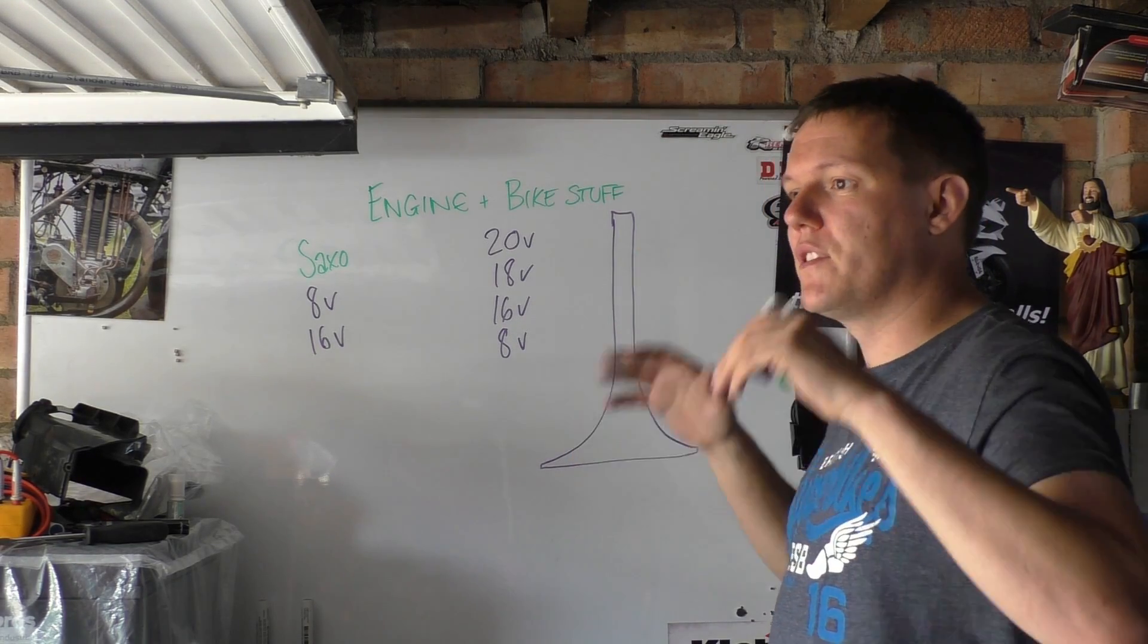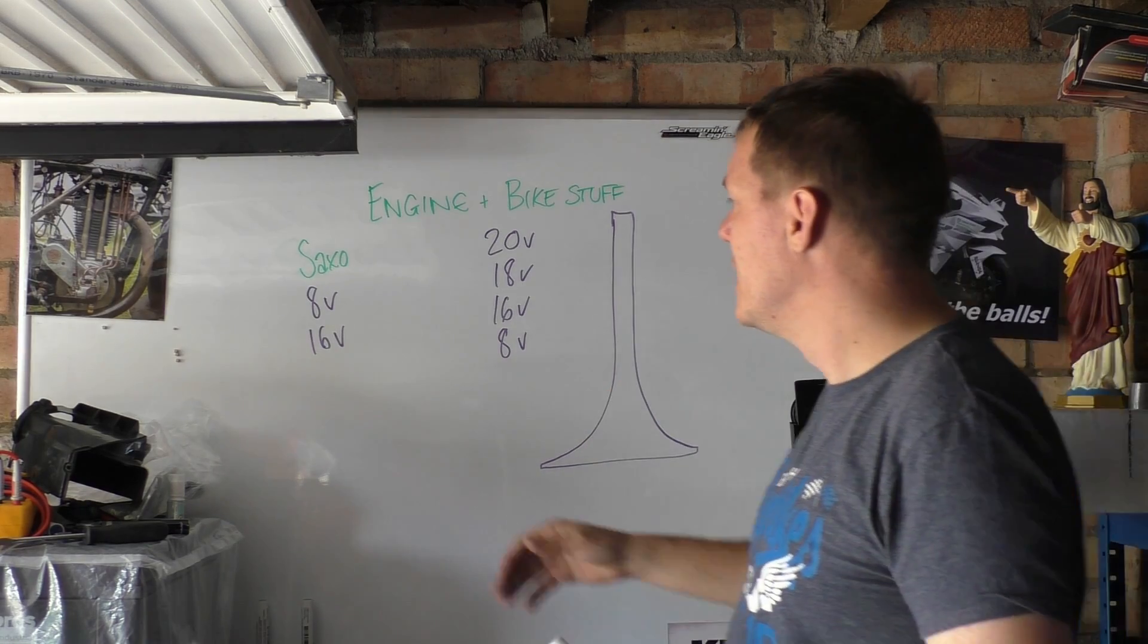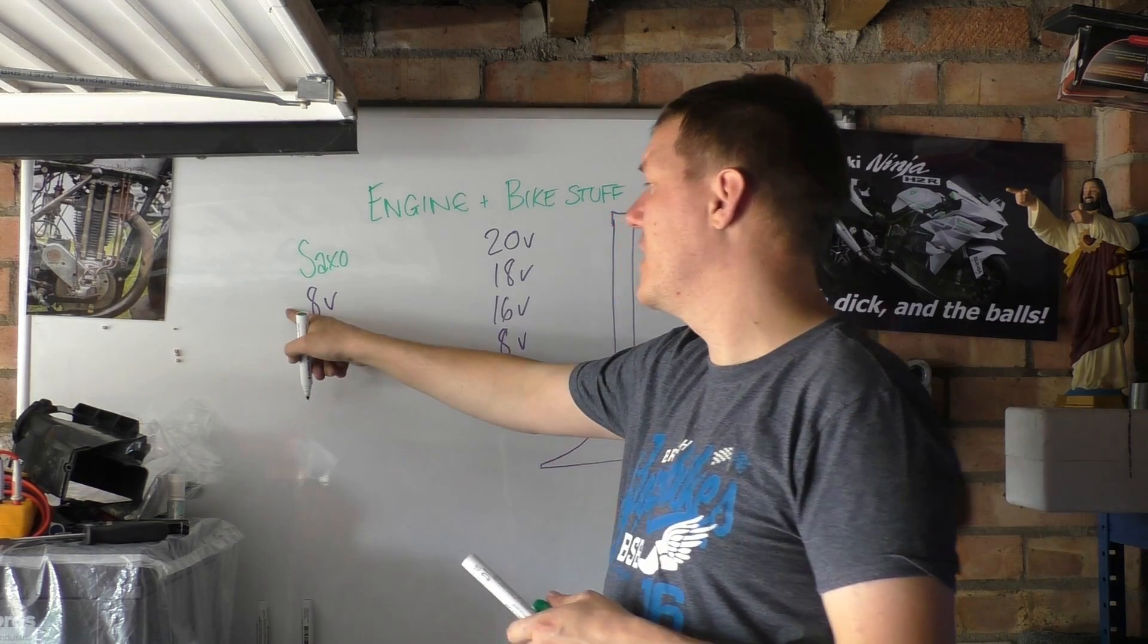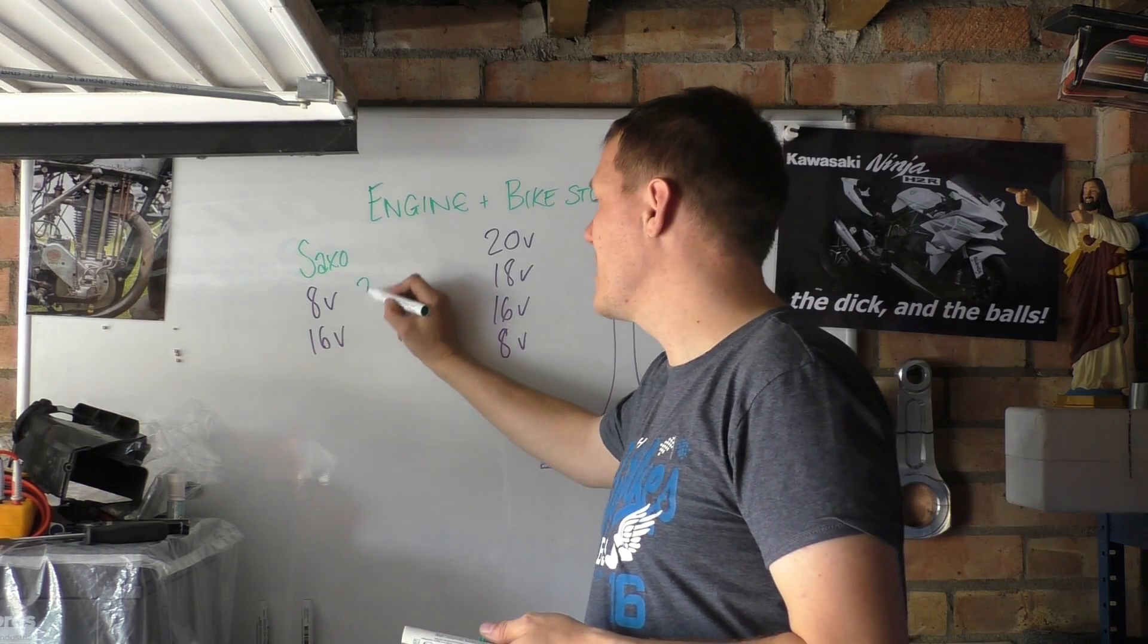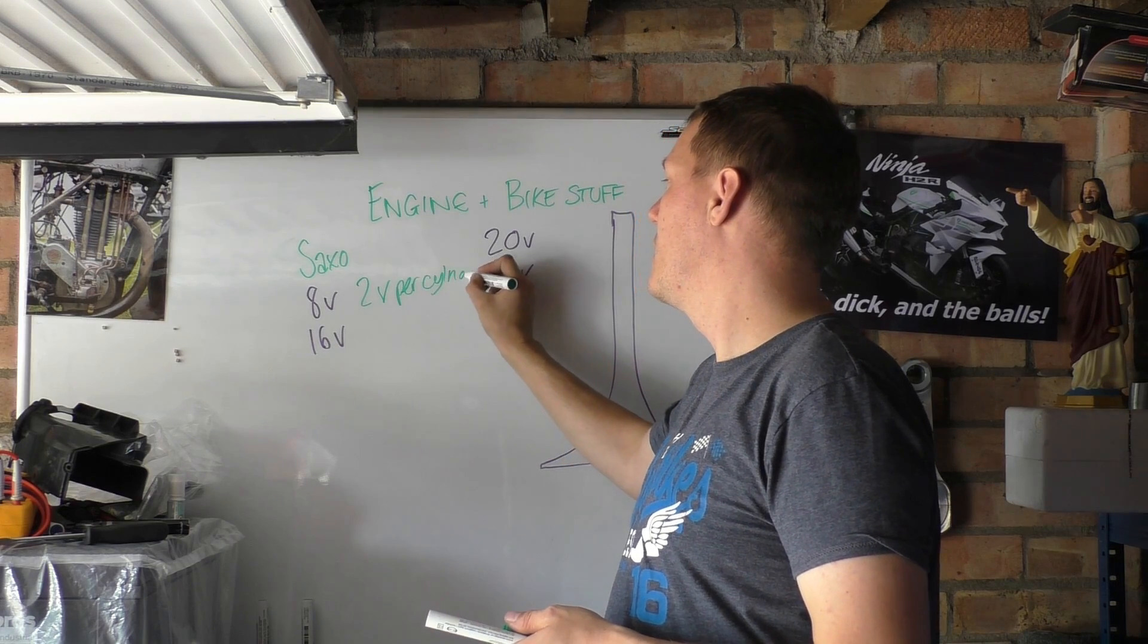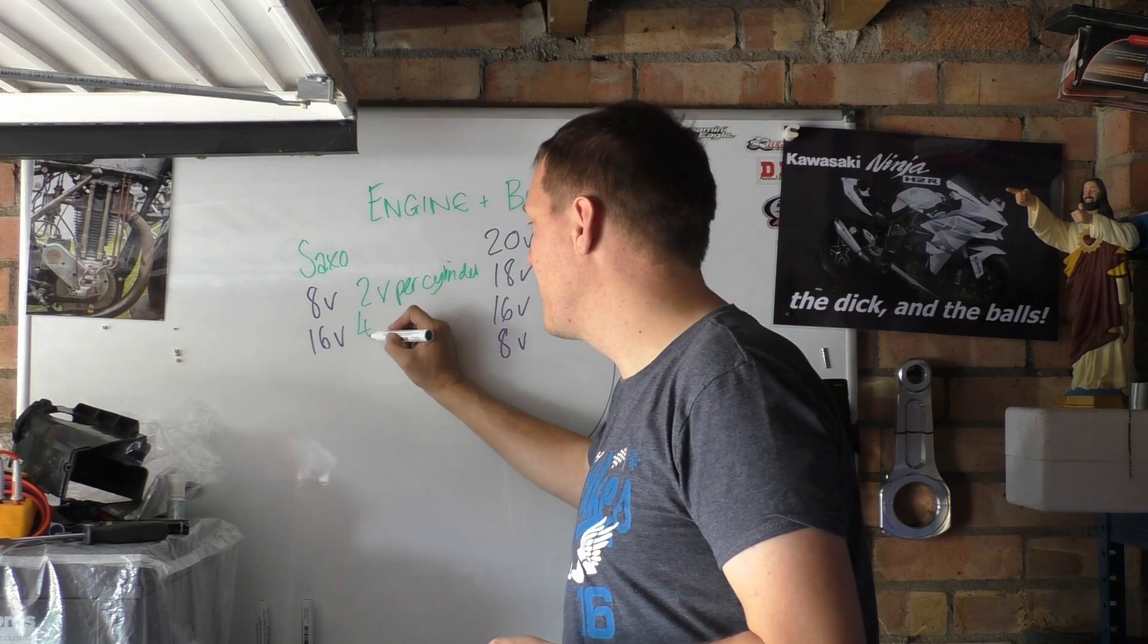And these valves have to go in each cylinder. So if you have a four cylinder engine, then you divide these numbers by four. For a four cylinder 8 valve, that's two valves per cylinder. And then a 16 valve would be four valves per cylinder.